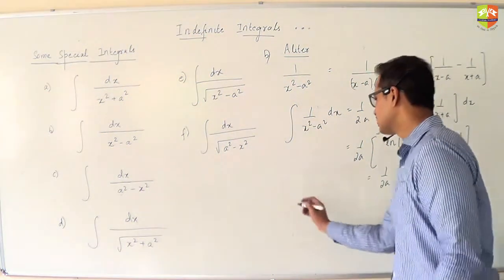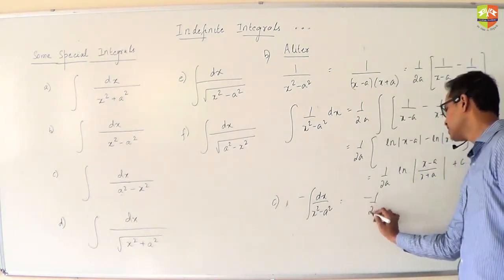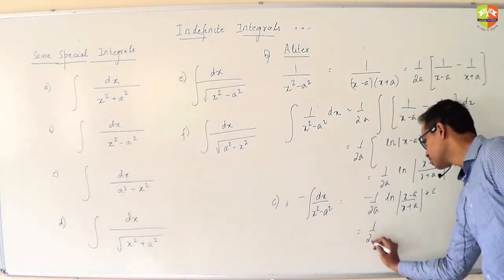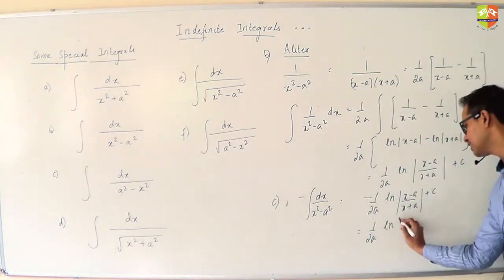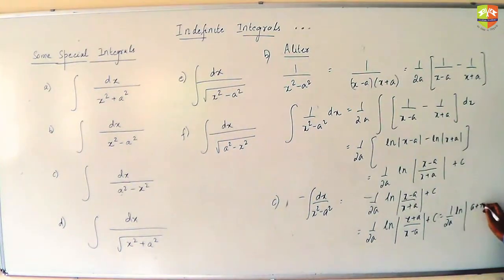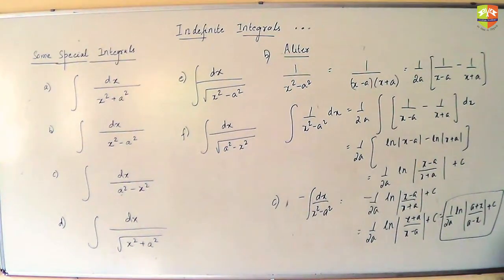But irrespective of whichever way you take, you should reach the same result. Now, c you don't have to bother much because it's minus of the integral which you have already derived. So if I take a minus of this, I will actually get my result. But normally the way it is written in the school textbooks is they take the minus as a power of this. So it becomes ln x plus a by x minus a. And sometimes they will write it as ln a plus x by a minus x as well.